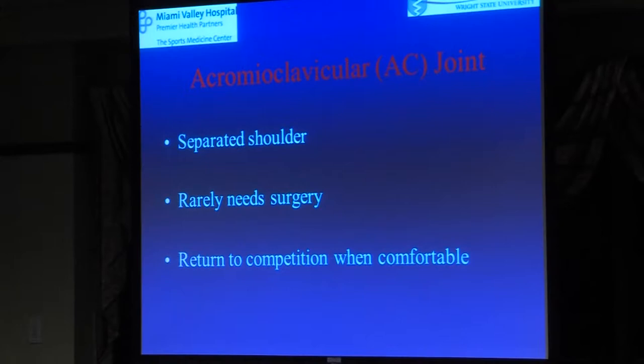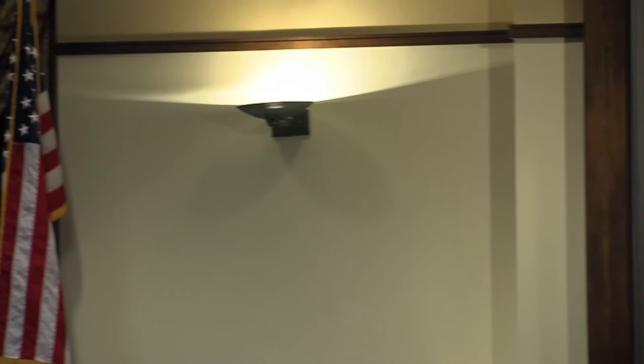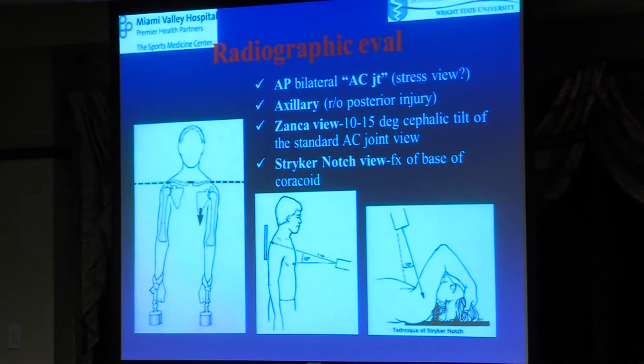These high-grade separations are infrequent. Most are very low-grade and don't need surgery — you can play when tolerated. There are people who play professional football the week after doing this; it's miserable, but you can live with it. To evaluate them, you get x-rays of both shoulders to see the distance between the clavicle and the coracoid. Axillary lateral views will also show whether the clavicle is anterior or posterior. The Zanca view and notch view are other ways to look at the same joint.